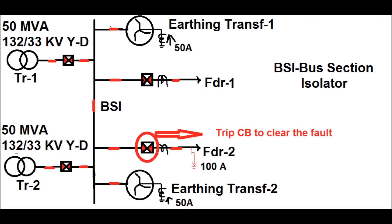This earth fault current will be supplied from both earthing transformers. As shown in this diagram, if the earth fault current is 100 amperes, then 50 amperes will be supplied from earthing transformer 1 and the remaining 50 amperes from earthing transformer 2, since the bus section isolator is closed. If the bus section isolator is opened and the fault exists in the earthing transformer 2 section, then the entire 100 amperes will be supplied from earthing transformer 2.